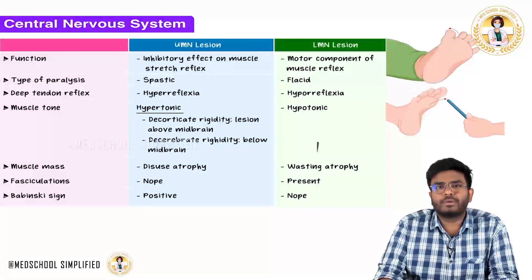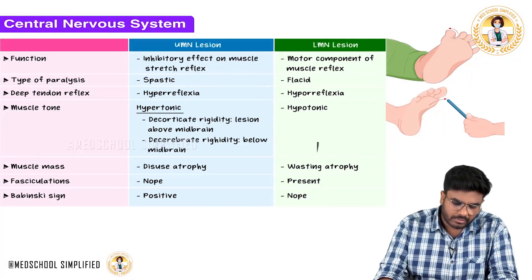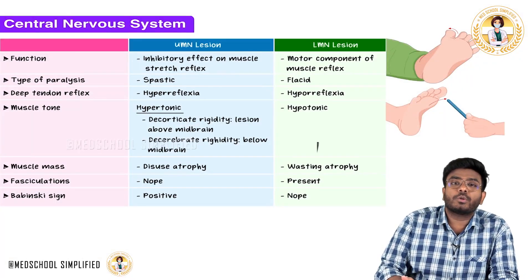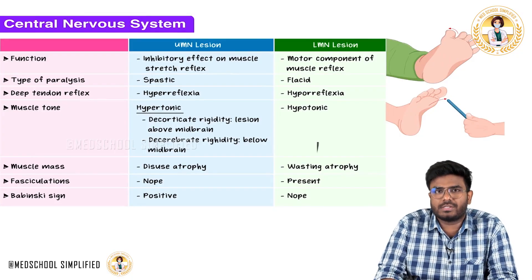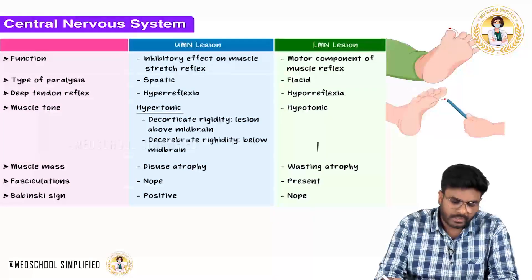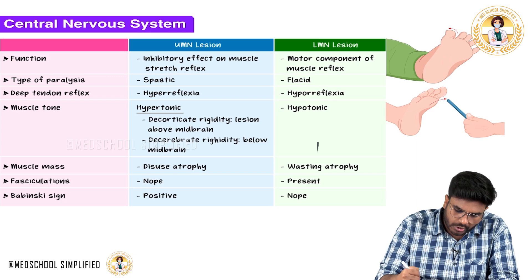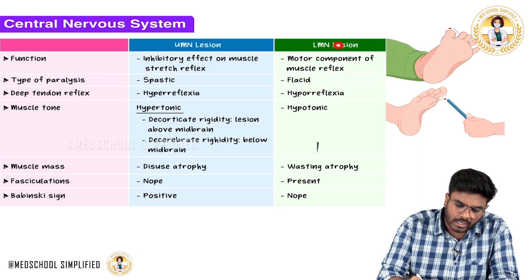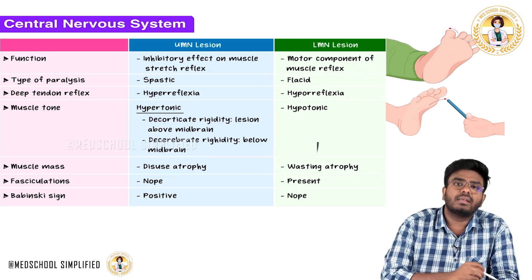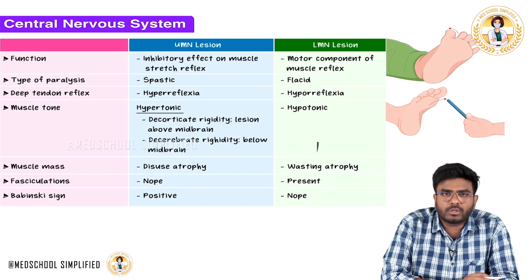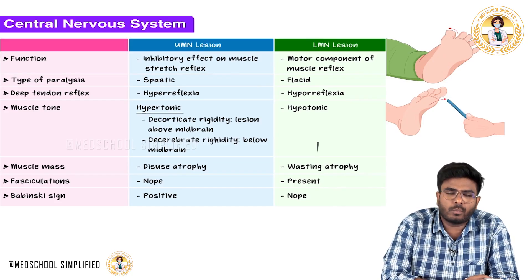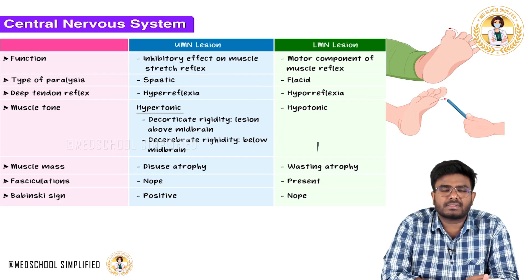Welcome back. In this video, let's discuss upper motor neuron lesions and lower motor neuron lesions. We have previously discussed upper motor neurons and lower motor neurons, including the two types of lower motor neurons: alpha motor neurons and gamma motor neurons.